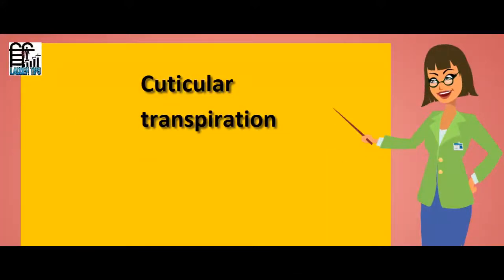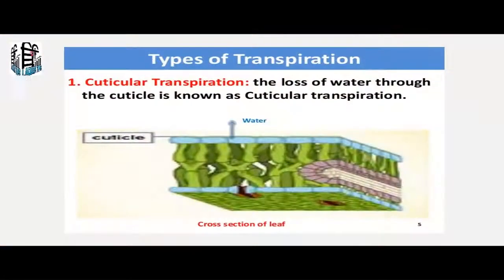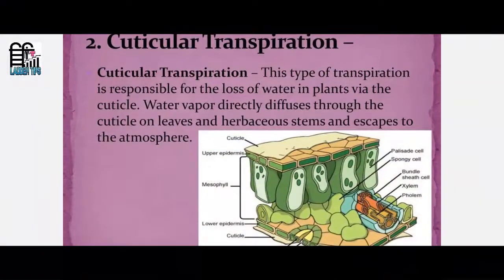Cuticular transpiration. This type of transpiration is responsible for the loss of water in plants via the cuticle. Water vapor directly diffuses through the cuticle on leaves and herbaceous stems and escapes to the atmosphere.